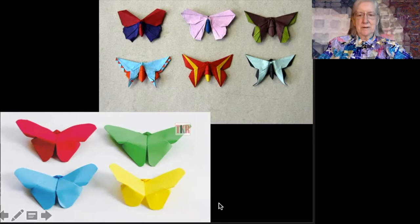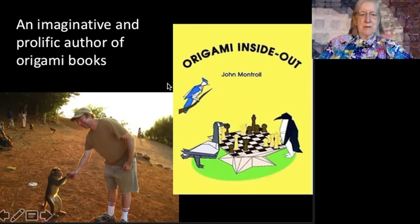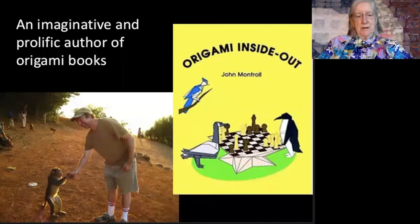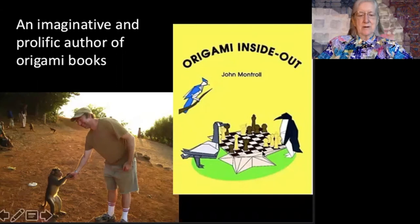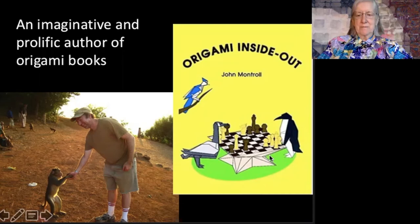Another imaginative and prolific author of origami books is John Montroll. I have this book of Origami Inside Out which is quite fun and intriguing because what he does in this book is to find ways to bring the white side of the paper and the colored side of the paper together to make a design such as a chess board or a penguin with both the black or colored and white sides showing.